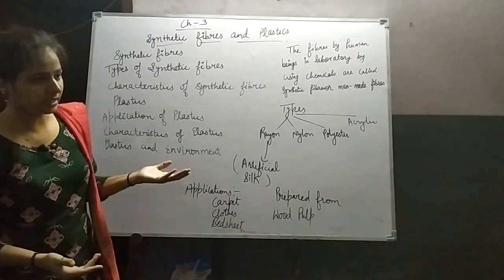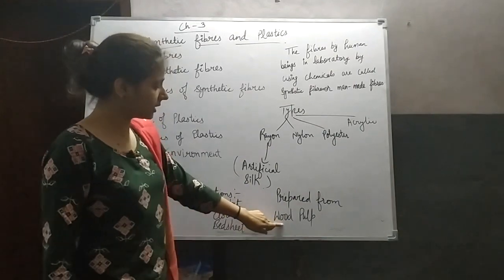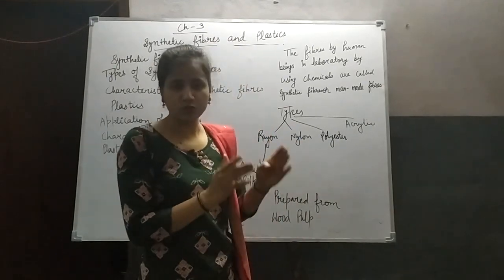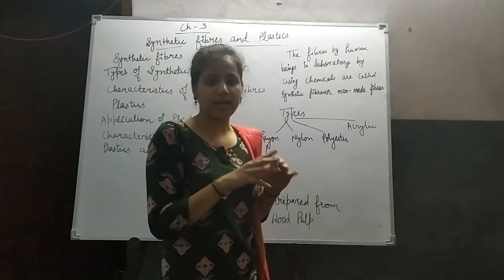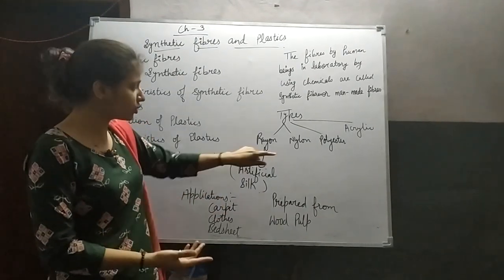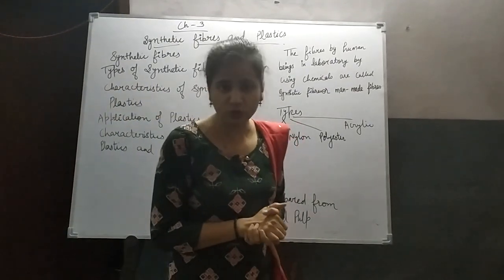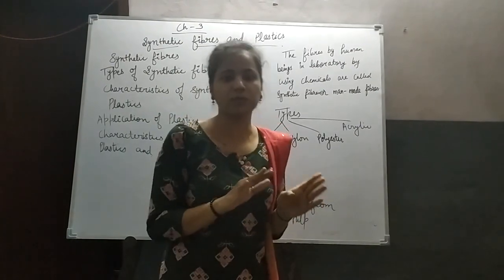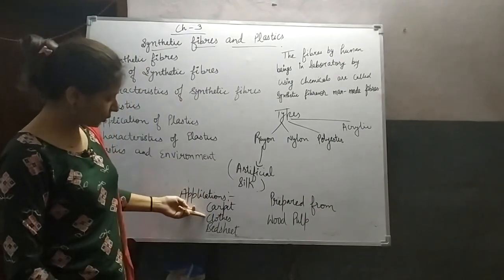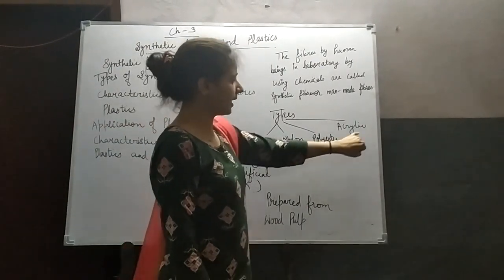Rayon, which we call artificial silk, is prepared from wood pulp. It is a synthetic fiber that resembles naturally obtained silk, so it is called man-made or artificial silk. Rayon is a cheap alternative to silk, which is very expensive. Applications of rayon include carpets, clothes, and bedsheets. We will study nylon, polyester, and acrylic in the next video.